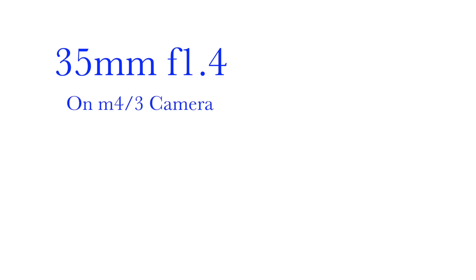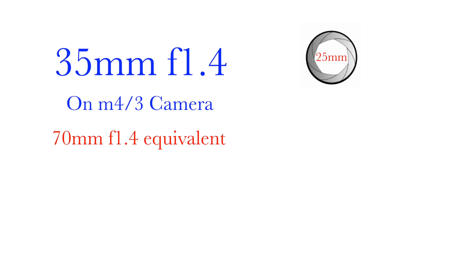Many people mistakenly assume that crop factor is only applied to the field of view, but nothing else. This results in the assertion that a 35mm f1.4 lens, when used on a micro four-thirds camera, becomes a 70mm f1.4. This is not the case. A 35mm f1.4 lens has an aperture opening of 25mm, which determines the light gathering capabilities and the depth of field at various distances. A 70mm f1.4 lens would have an aperture opening of 50mm, which would drastically increase the light gathering capabilities as well as drastically reduce the depth of field at a given focus distance.